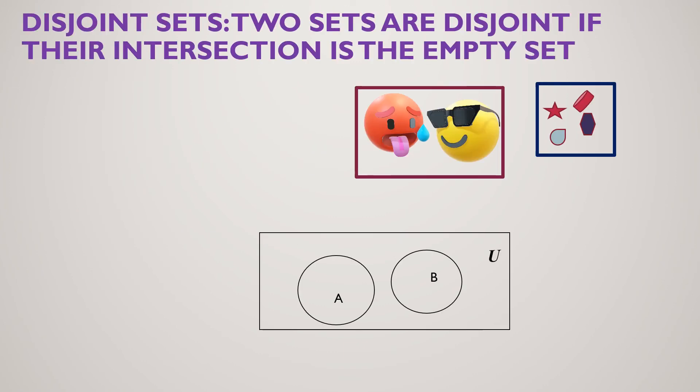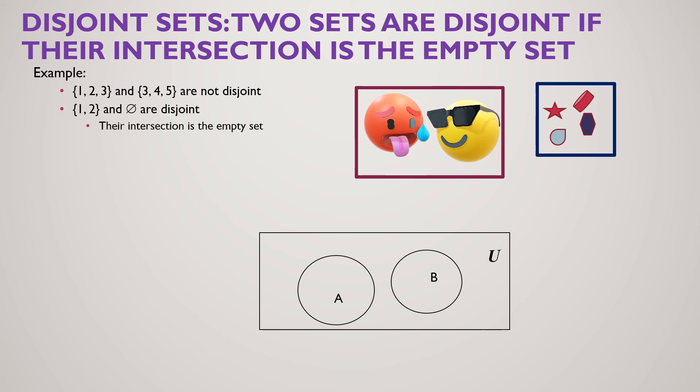Next we have disjoint sets. Two sets are said to be disjoint if their intersection is empty — that is, nothing is in common between the two sets. Suppose we have a set of emojis and a set of shapes; we can observe there is nothing common between them, so these sets are disjoint. Note that {1, 2, 3} and {3, 4, 5} are not disjoint since 3 is common, whereas {1, 2} and {5} are disjoint because their intersection is empty.